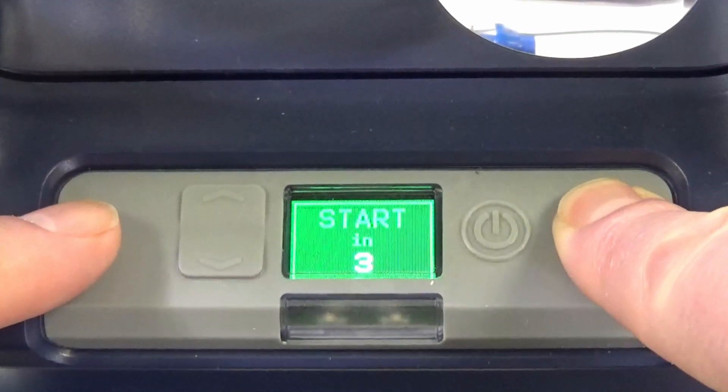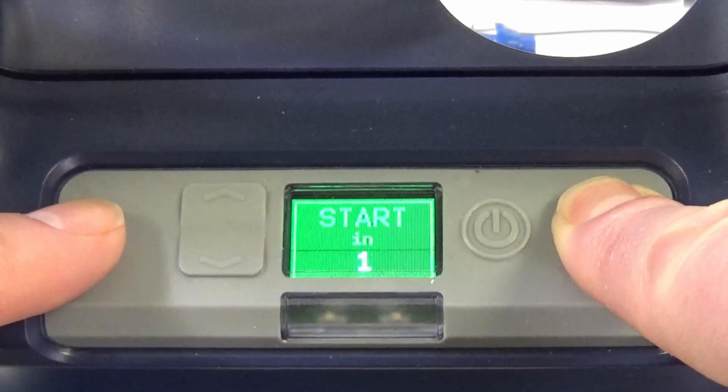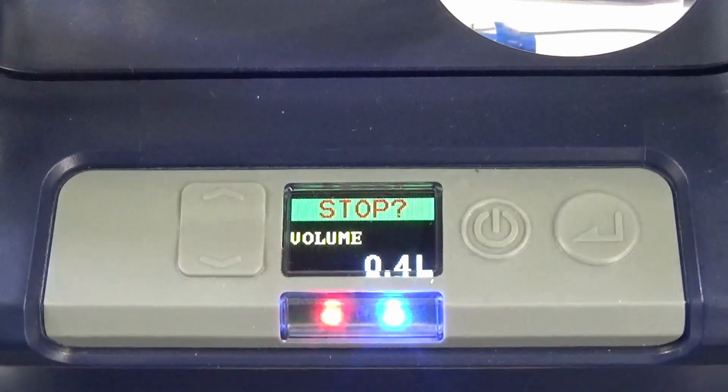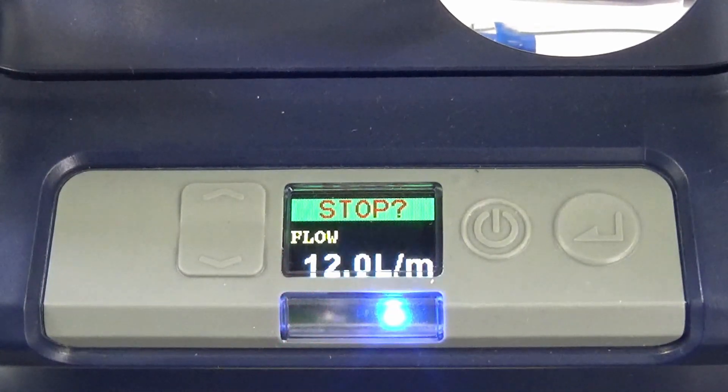Once the pump has been removed from the rotameter, hold the enter key down to start the pump. It will then perform a countdown of 3 seconds and the pump will start running.